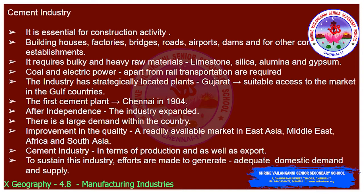The manufacturing of cement requires bulky and heavy raw materials like limestone, silica, alumina and gypsum. Limestone is the main raw material and it comprises 60 to 65 percentage of the total product. Hence the location of a cement plant is based on the limestone deposits. Apart from rail transportation, coal and electric power are also required. Power is essential for grinding the raw materials and coal is used as a fuel and also to burn the limestone.